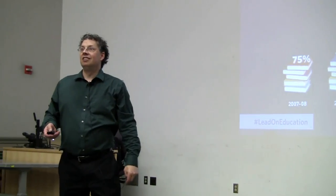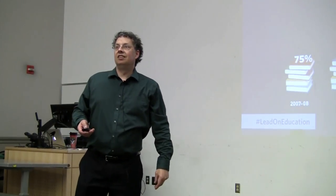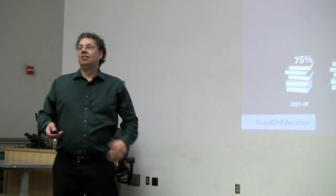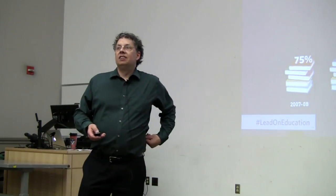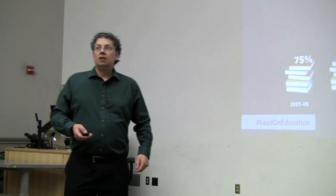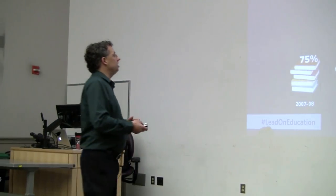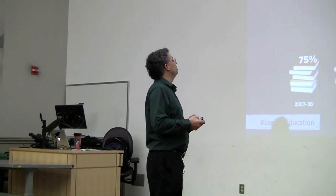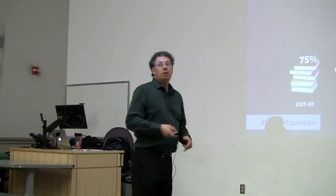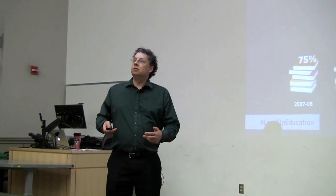A student asks: wasn't this effectively trying to be a line graph, since it's trying to show changes over time? The instructor responds: it could effectively be a line graph — that's an interesting comment. But if you did a line graph, you couldn't have little books.